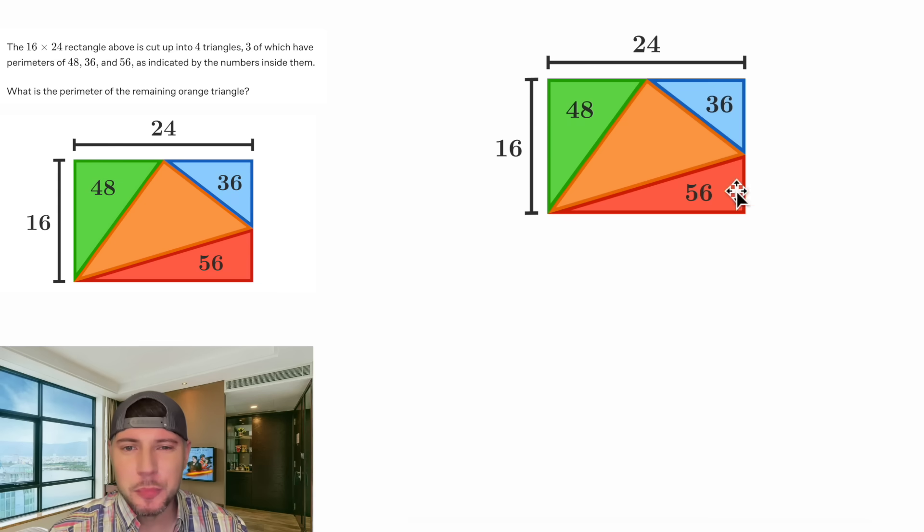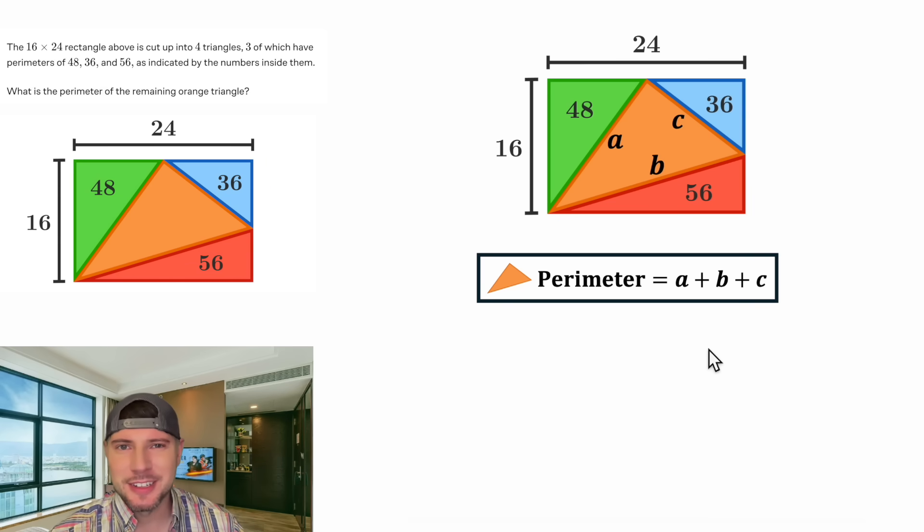First, since we're trying to find the perimeter of the orange triangle, I want to create a formula for the perimeter of the orange triangle. Let's call this side length A, this side length B, and this side length C. And now we can say the orange triangle perimeter is equal to A plus B plus C. This looks important. Let's put a box around it.